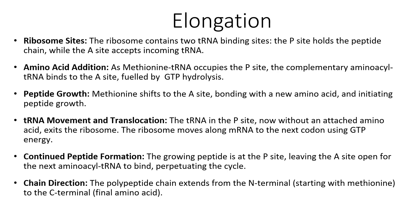The second step of translation is elongation. At the ribosome, the ribosome contains two tRNA binding sites. One is the P site, which holds the peptide chain, while the A site accepts incoming transfer RNA. As the methionine-tRNA occupies the P site, the complementary amino acid tRNA binds to the A site, which requires energy from GTP hydrolysis. Peptide growth occurs when the methionine shifts to the A site, bonding with a new amino acid and initiating peptide growth.